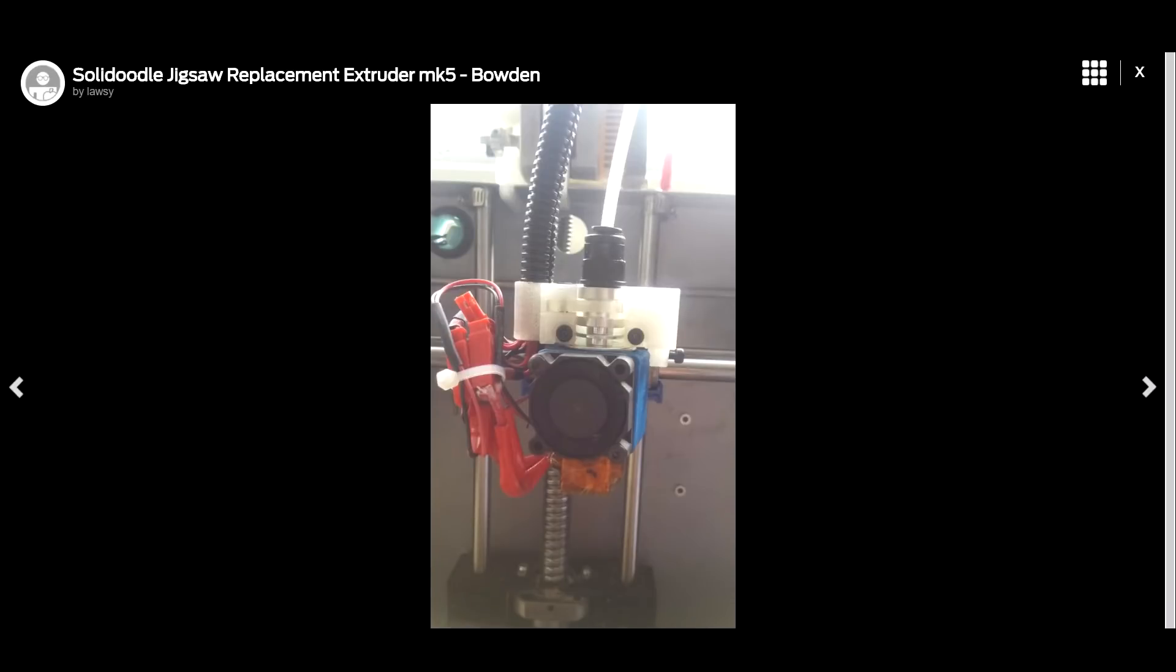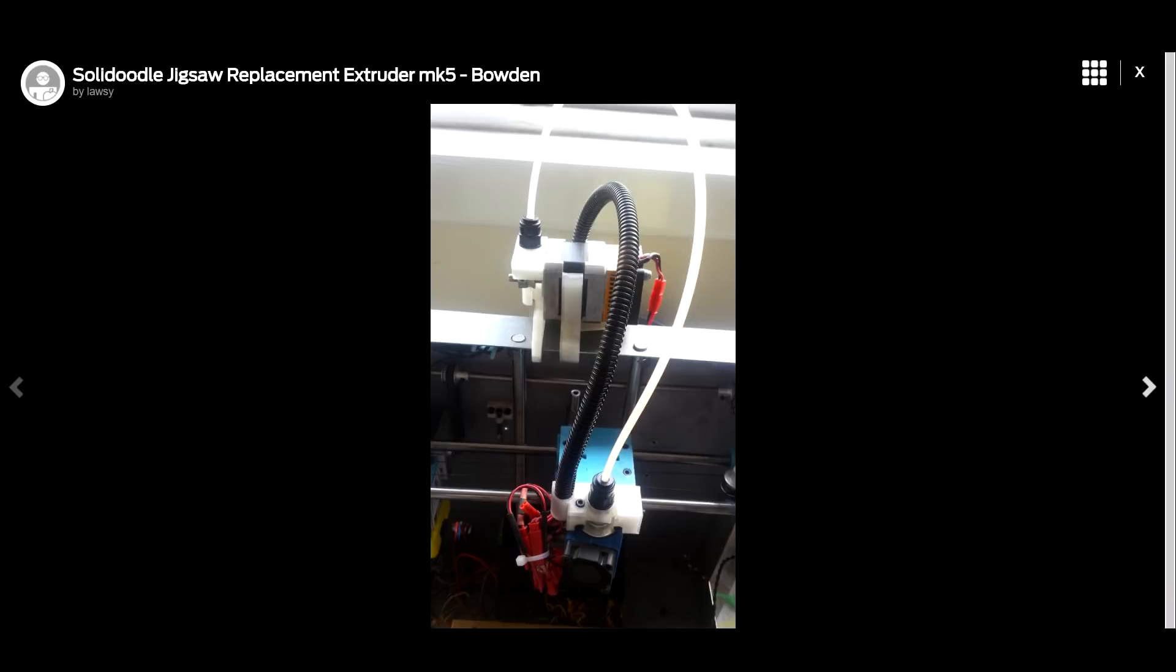The printer was still prone to missing steps halfway through a print and ruining them, so I figured the less weight I could have it moving around the better it would print. At this stage I decided to go to Bowden. I modified the extruder to take an E3D version 6 and moved the extruder stepper up to the top of the frame. I think that was the last mod that I released publicly, but that didn't mean I wasn't doing crazy things behind the scenes.